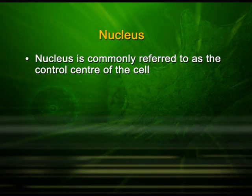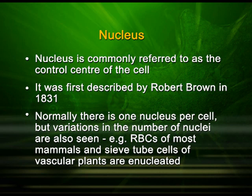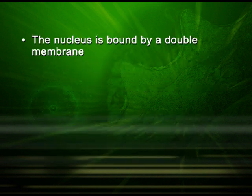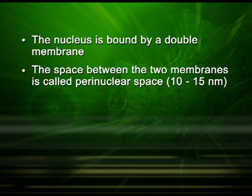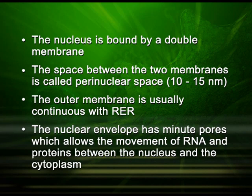The nucleus is commonly referred to as the control center of the cell. It was first described by Robert Brown in 1831. Normally there is one nucleus per cell, but variations occur — for example, in most mammalian RBCs and sieve tube cells of vascular plants, there is no nucleus. The nucleus is bound by a double membrane; the space between them is called the perinuclear space, which is 10 to 15 nanometers. The outer membrane is usually continuous with the rough endoplasmic reticulum. The nuclear envelope has minute pores which allow movement of RNA and proteins between the nucleus and the cytoplasm.